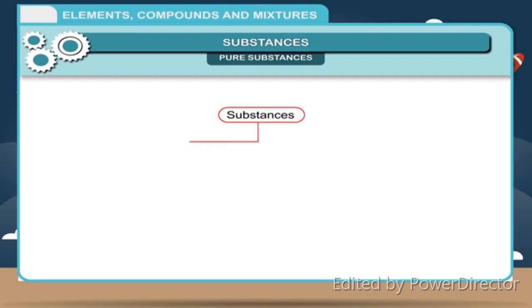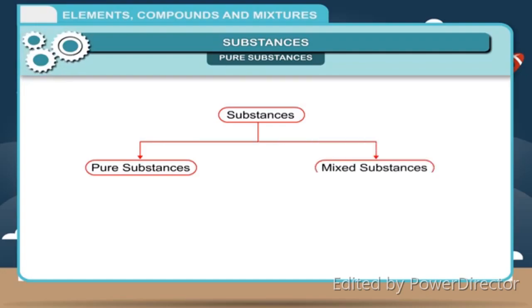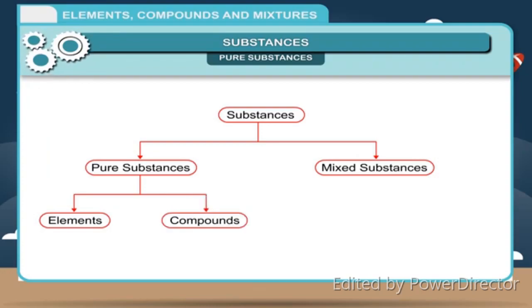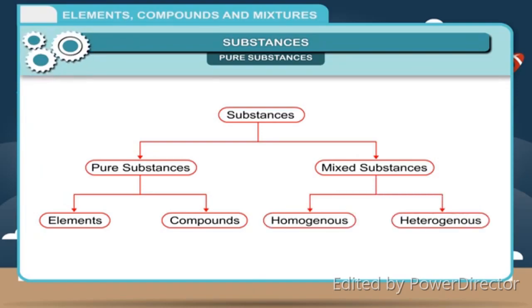On the basis of composition, substances are classified into pure substances and impure substances. The pure substances are again classified into elements and compounds, and the impure substances or mixed substances are again classified into homogeneous and heterogeneous substances.